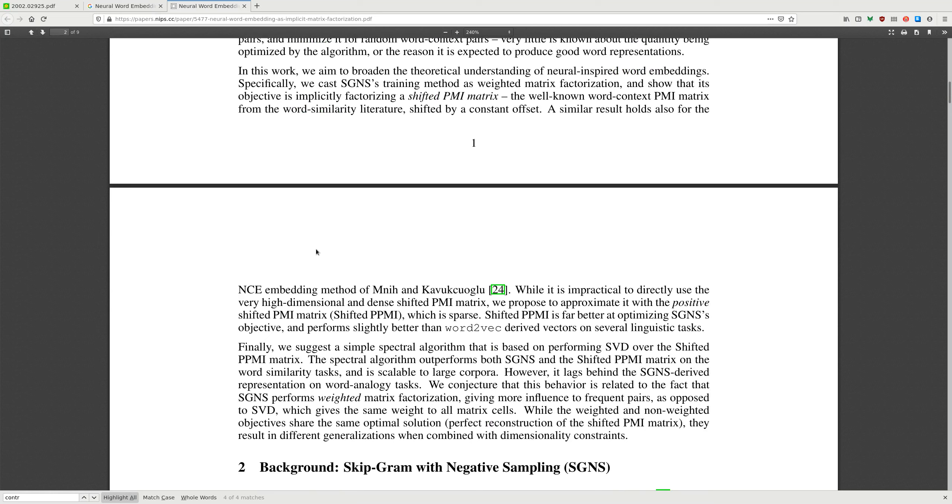In this work, we aim to broaden the theoretical understanding of neural inspired word embeddings. Specifically, we cast SGNS training method as weighted matrix factorization and show that its objective is implicitly factorizing a shifted PMI matrix.